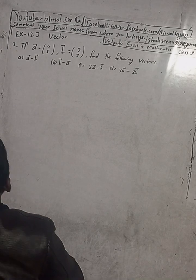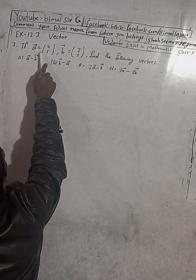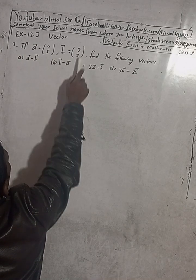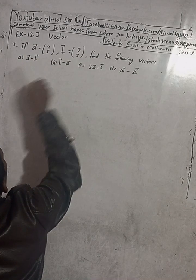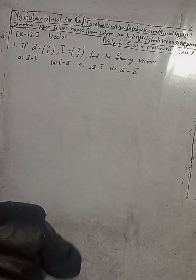And now the question is here, number 3. If A vector is equal to (4,5), B vector is equal to (2,3), find the following vectors. So part A is A vector minus B vector.